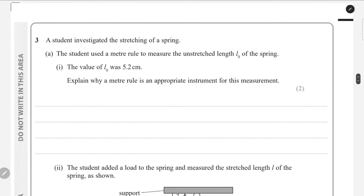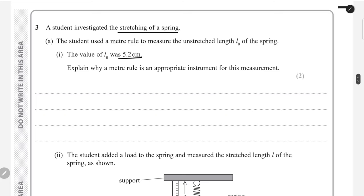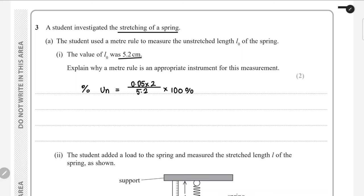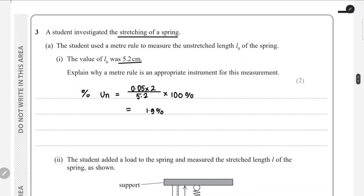Moving on to question 3, an investigation of the stretching of a spring. A meter rule was used to find the unstretched length of 5.2 cm. To justify this as appropriate, we calculate the percentage uncertainty: for a meter rule (double reading instrument), uncertainty = 2 × 0.05 = 0.10 mm. Percentage uncertainty = (0.10 / 5.2) × 100 ≈ 1.9%, which is approximately 2% — small enough to be appropriate.